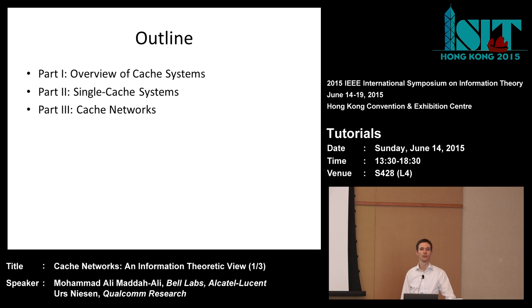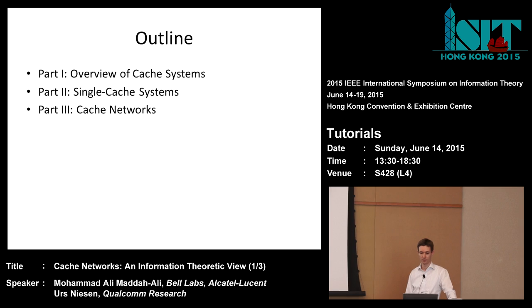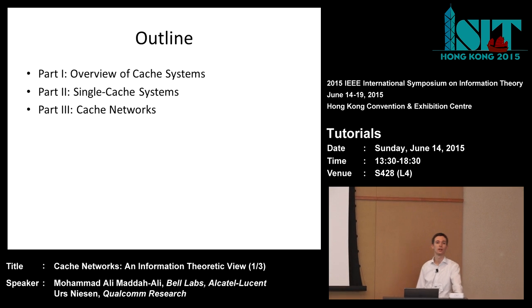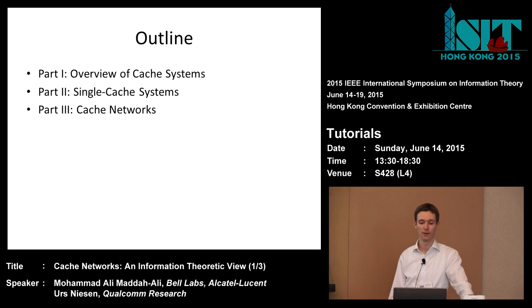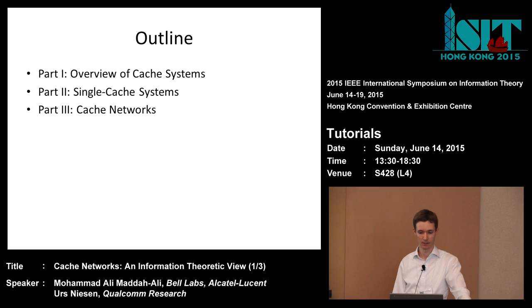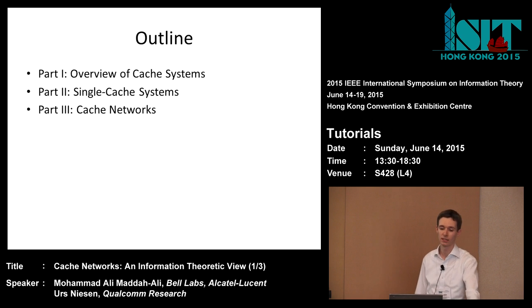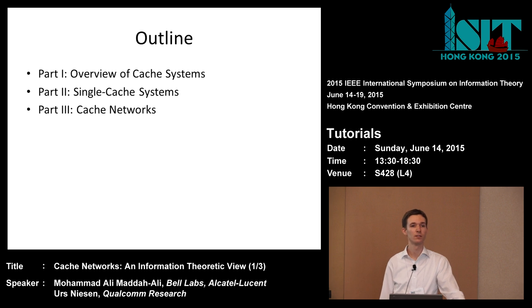I'll give you examples of several cache systems, and I will mention performance metrics and some of the history of this topic. Then in part two, Mohamed will talk about single cache systems — the theory of systems with a single cache, mostly developed in the computer science and systems community in the 80s and 90s. Then in part three, we will talk about networks of caches, results mostly derived in the information theory literature over the last three or four years.